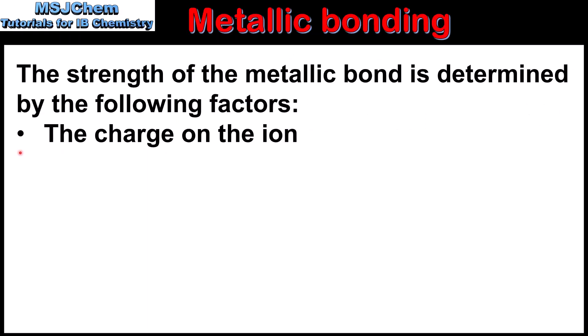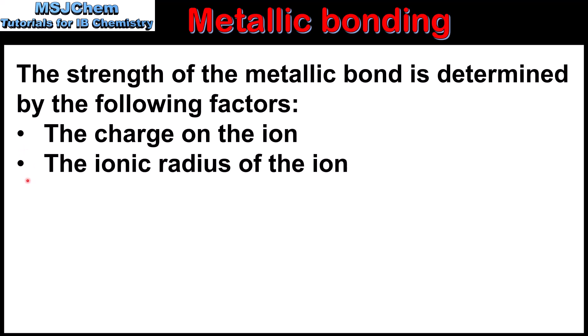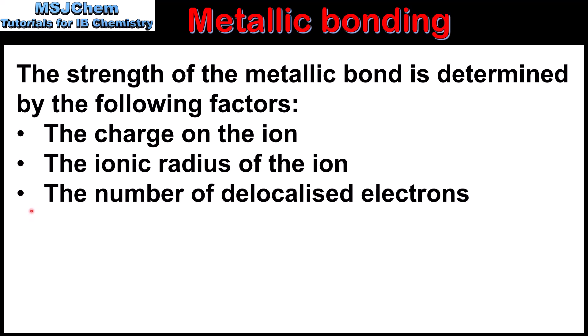Let's begin by looking at the factors. The first factor is the charge on the ion. The second is the ionic radius of the ion. And the third is the number of delocalized electrons. Next we look at how these factors affect the strength of the metallic bond.